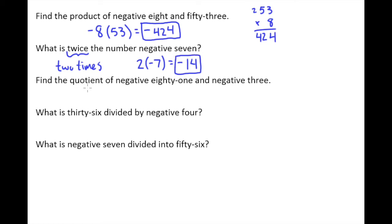The third one here says find the quotient of negative 81 and negative 3. The word quotient means division. Just like the word difference for subtraction tells you to subtract in the order of the numbers given, the word quotient means divide in the order of the numbers given. So negative 81 came first so that'll come first in my division, and negative 3 came second.